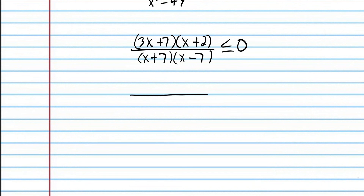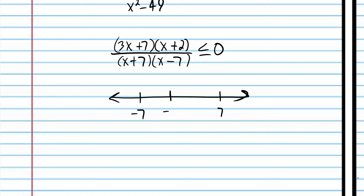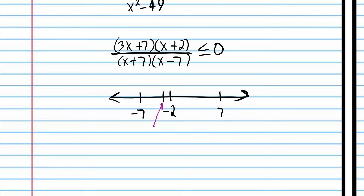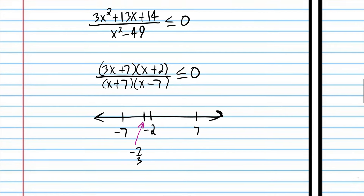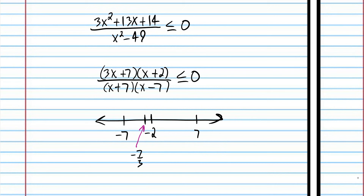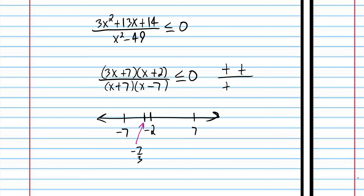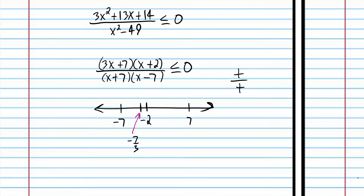Now we can write a sign chart. We have seven and negative seven, and we have negative two and negative seven thirds. Let's plug in eight: we get a positive times a positive divided by a positive times a positive — that's obviously positive. Let's plug in zero to test this region: positive times a positive divided by a positive times a negative equals a positive divided by a negative, which is negative.